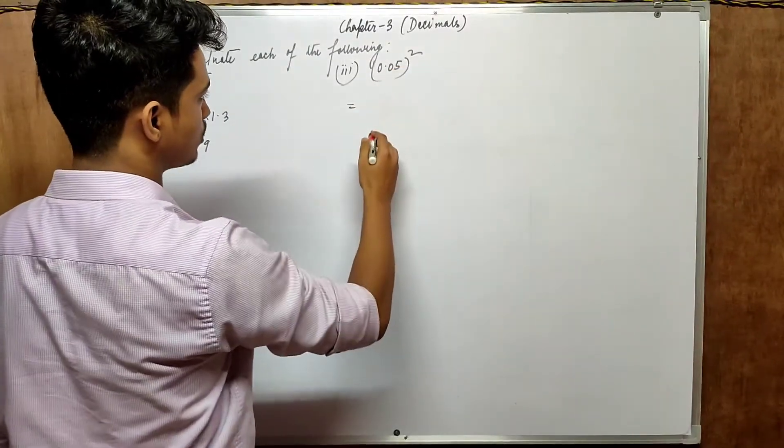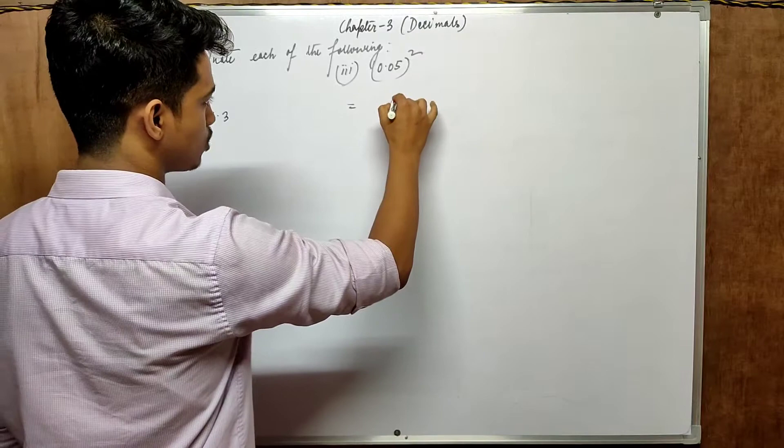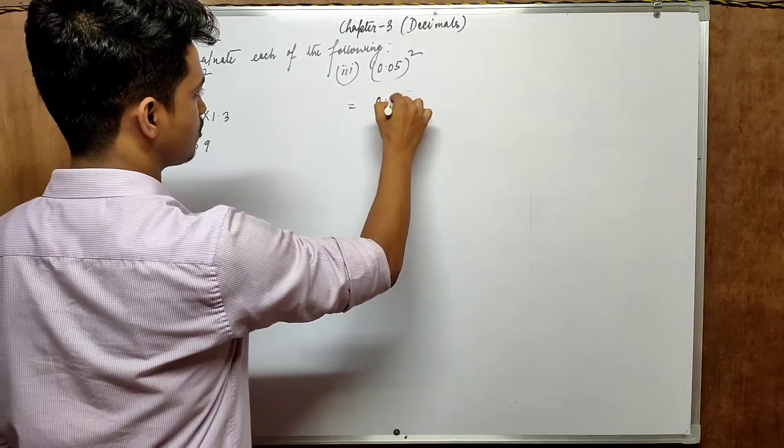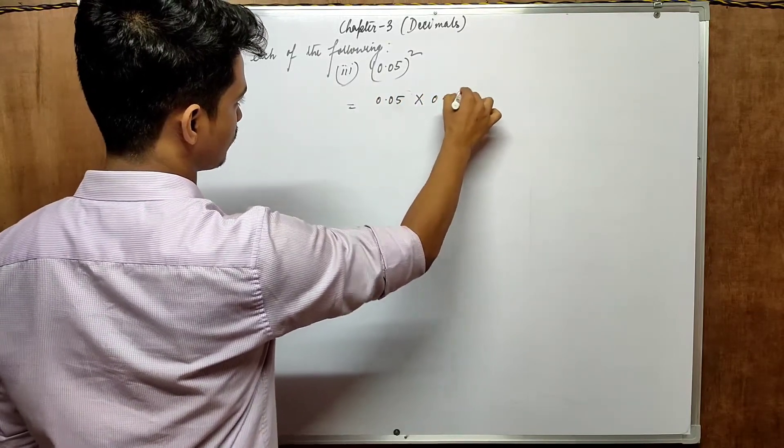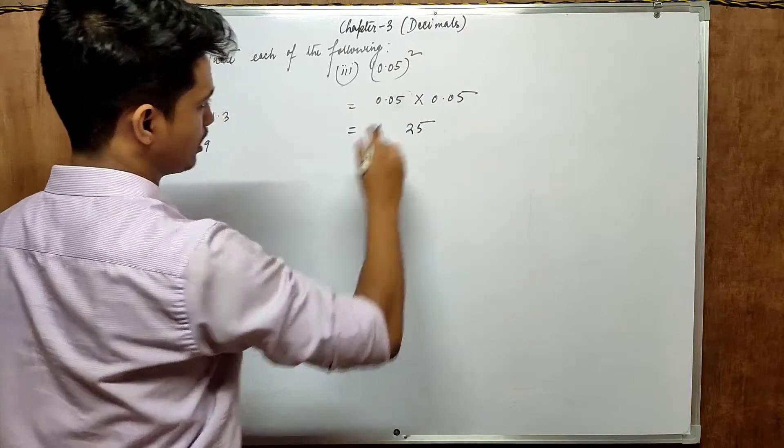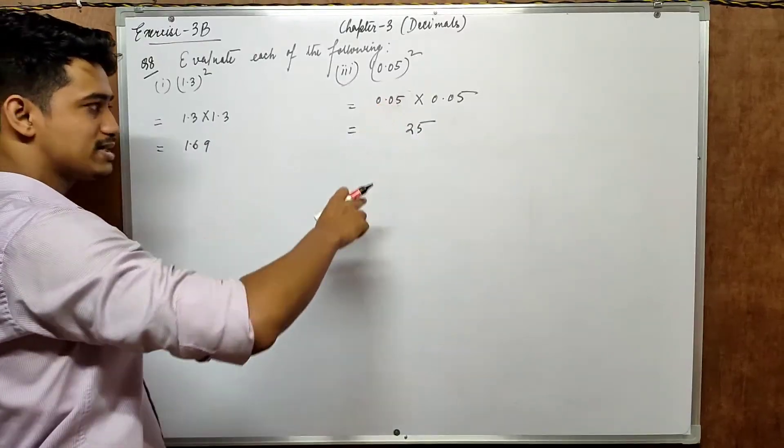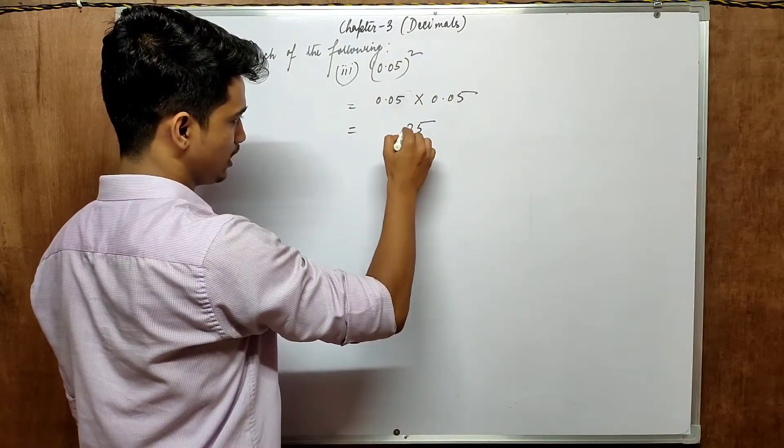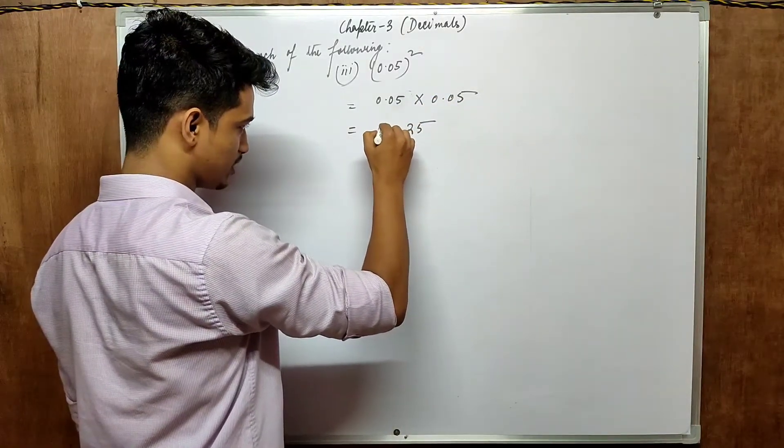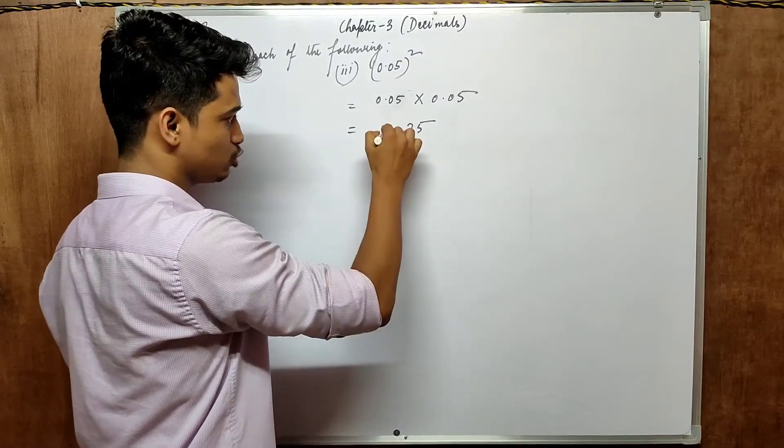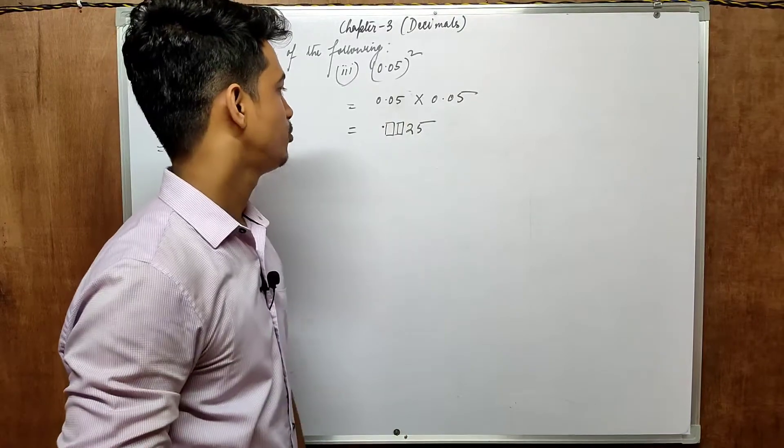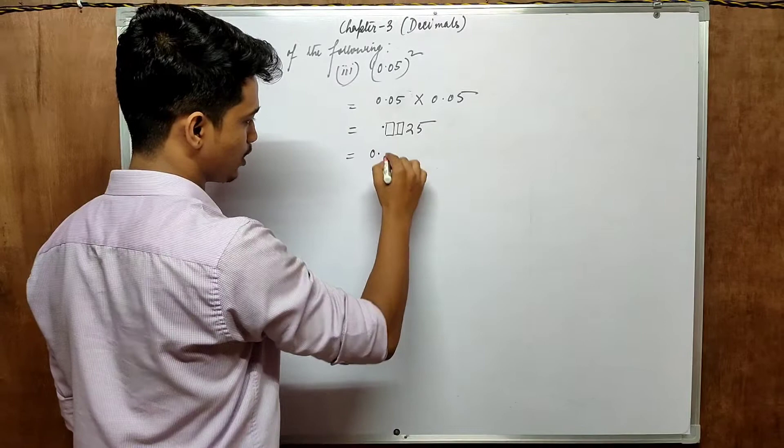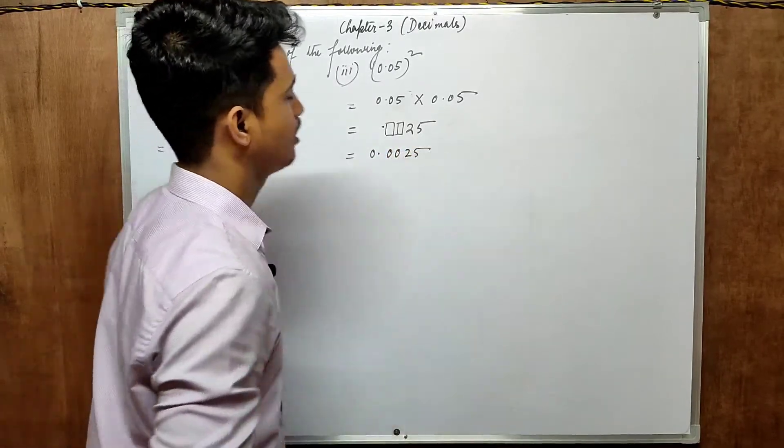Let's just move on to our next one, 0.05. We know 5 square is 25. So we will write down 0.05 into 0.05. 5 into 5 is 25. So how many digits are there after point? 1, 2, 3, 4. So that means 4 places 1, 2, 3 and 4. After that there will be point. So that means there has to be 2 places of vacant position. So we will just fill up those 2 positions with 0. So the answer will be 0.0025.